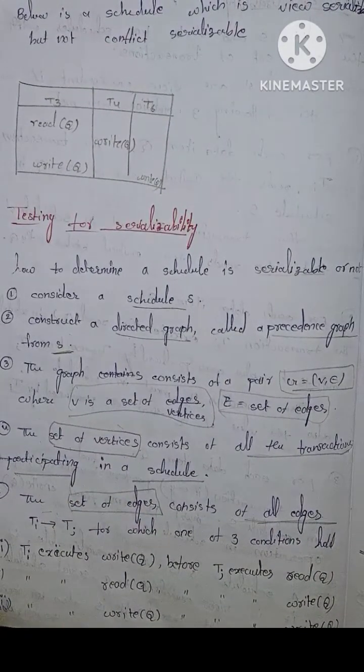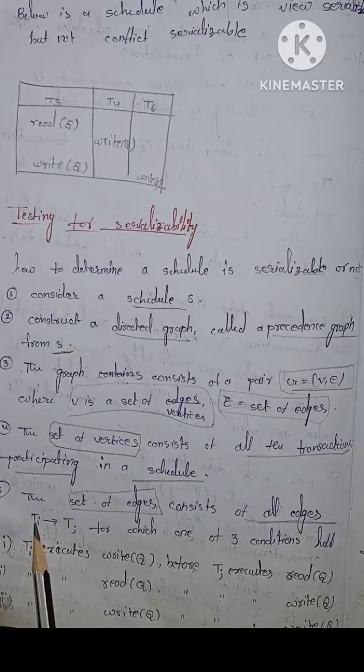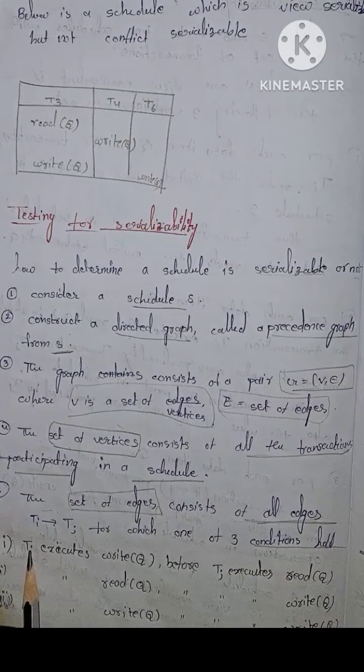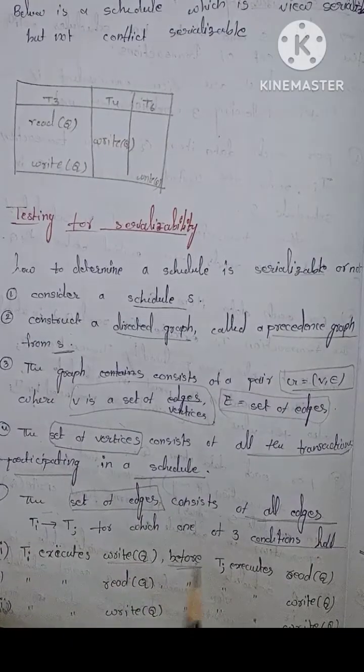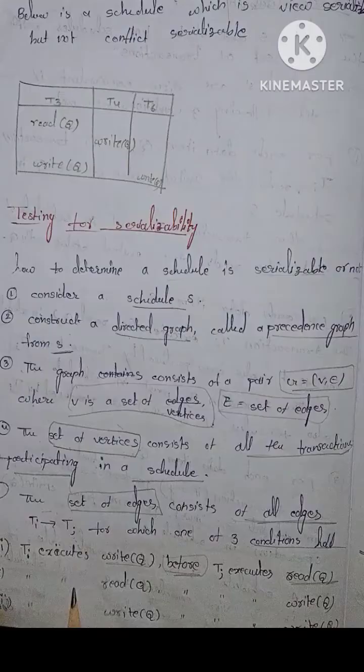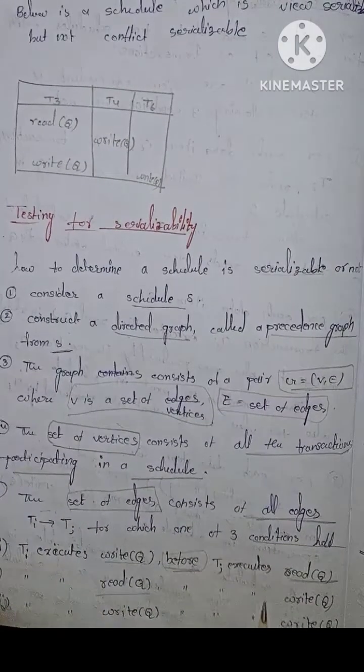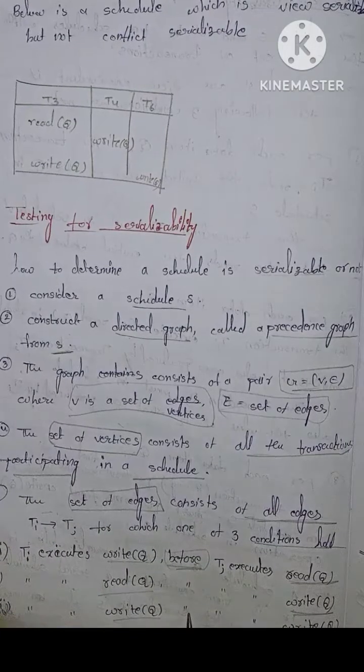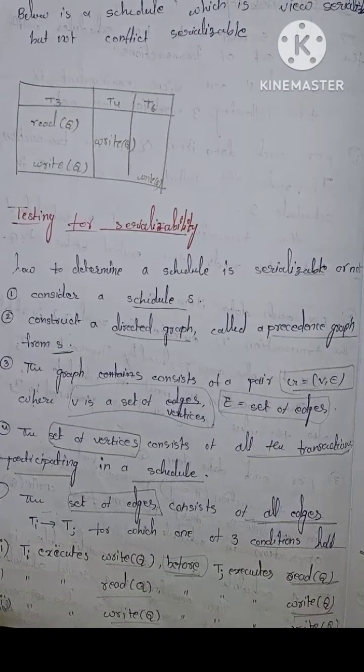The set of edges consists of all edges Ti gives Tj for which one of three conditions hold. The first one is Ti executes write Q before Tj executes read Q. Next is Ti executes read Q before Tj executes write Q. The third condition is Ti executes write Q before Tj executes write Q.